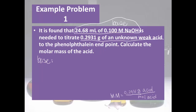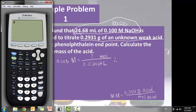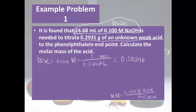Since moles of acid equals moles of base, we'll use the base data. Using the molarity formula — molarity equals moles over liters — the molarity of the NaOH was 0.100, and the volume was 24.68 milliliters, which we convert to 0.02468 liters. Multiplying those together gives us 0.002468 moles of base.